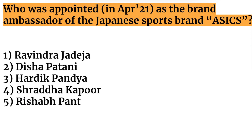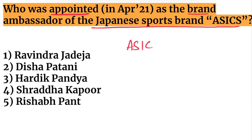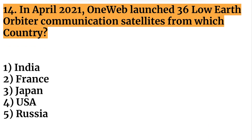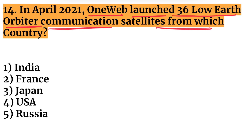Who was appointed as the brand ambassador of the Japanese sports brand ASICS? Ravindra Jadeja has been appointed as the brand ambassador of ASICS, which is a Japanese sports brand.